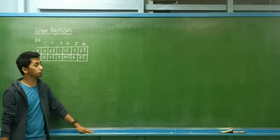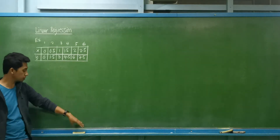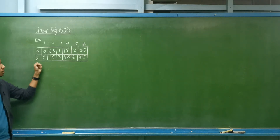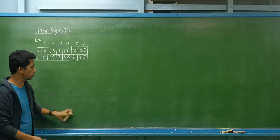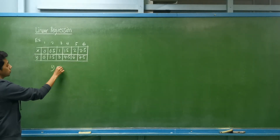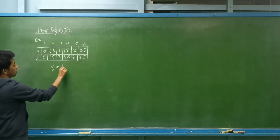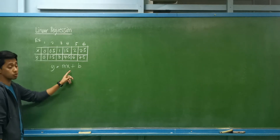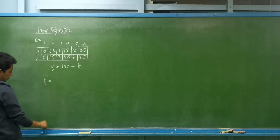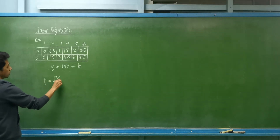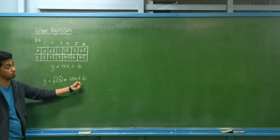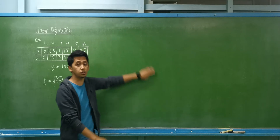Today we are going to discuss curve fitting, specifically line regression. First of all, we have a set of data for x and y. We are required to determine the equation of this line. From analytic geometry, the general equation for a line is y = mx + b, where m is the slope and b is the y-intercept. Here we use f(x) = ax + b, where a is the slope and b is the y-intercept.